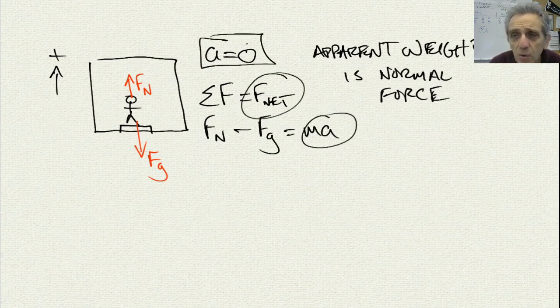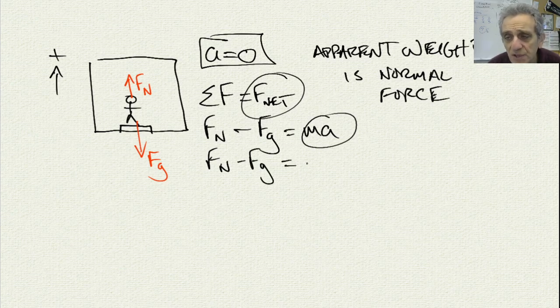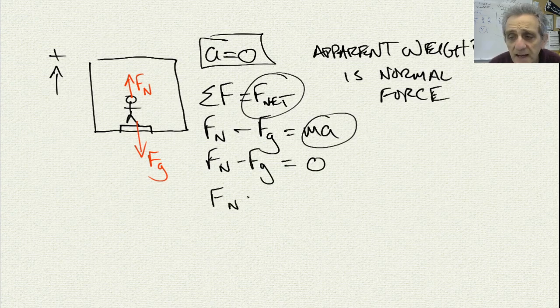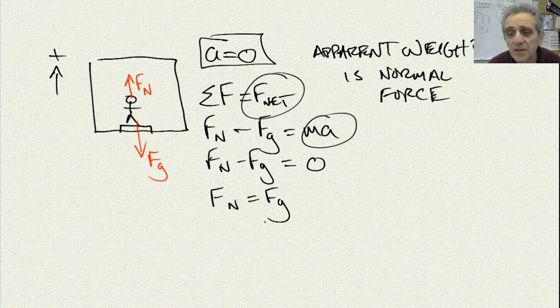But because I know the acceleration is zero, that means MA is zero. So when I go Fn minus Fg, that's going to equal zero, because A is zero. Now, I can say that Fn equals Fg.